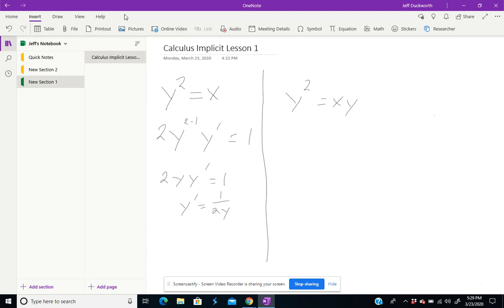So on the left, I'm going to do the same thing that I did over here. But on the right side of the equation, I have x and I have y. I have two things multiplied together, so I'm going to use the product rule on the right side. So here we go. We have a 2y y prime as before.